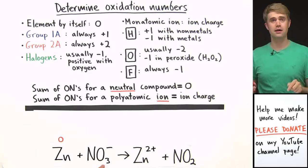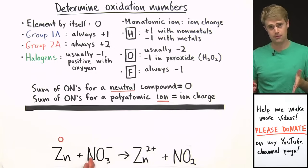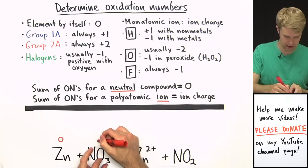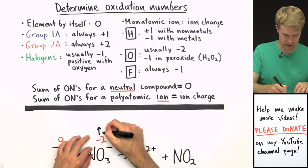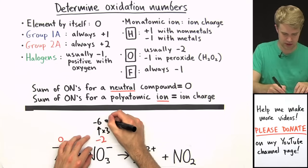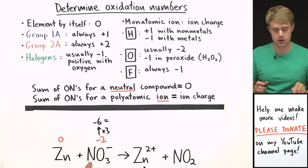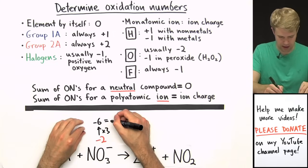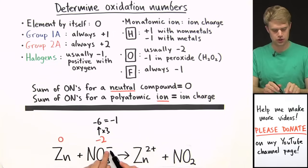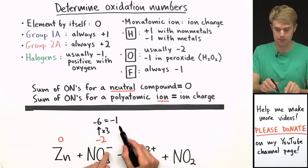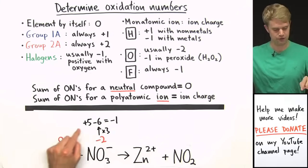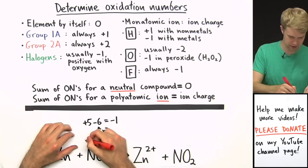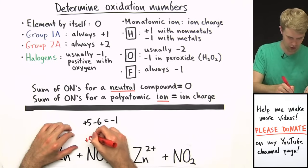NO₃⁻ is a polyatomic ion. We don't know what nitrogen's oxidation number is, so we'll have to figure it out. Oxygen's is usually minus two — we have three oxygens, so minus two times three gives us minus six. Whatever nitrogen's oxidation number is has to add with minus six to make minus one, because that's the charge on this polyatomic ion and all oxidation numbers have to add up to that charge. So nitrogen's oxidation number is plus five: plus five minus six equals minus one.